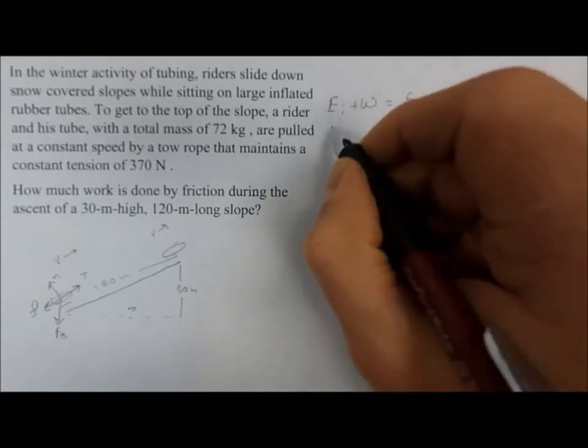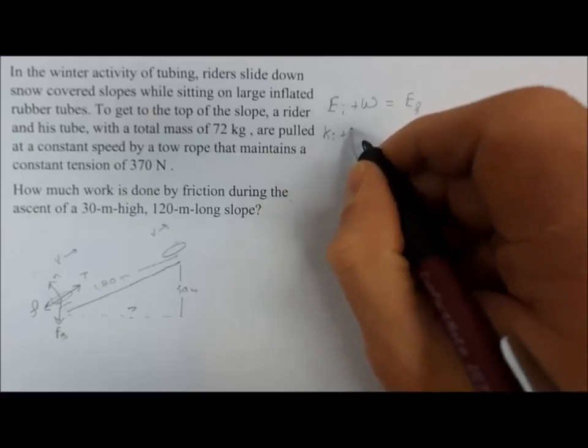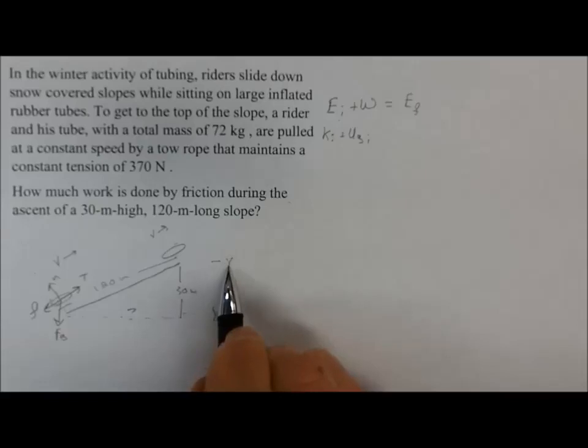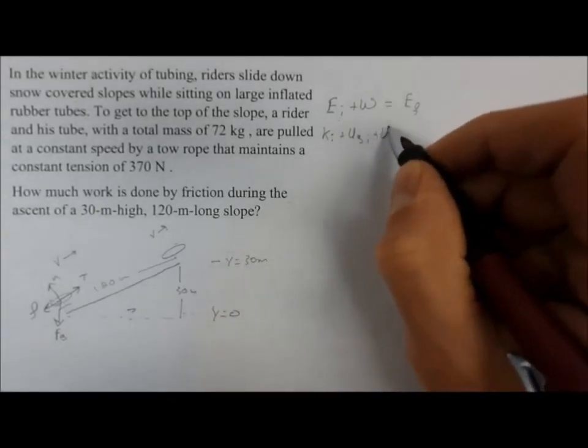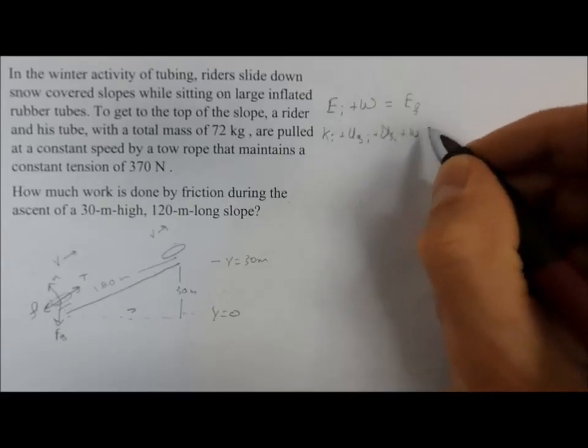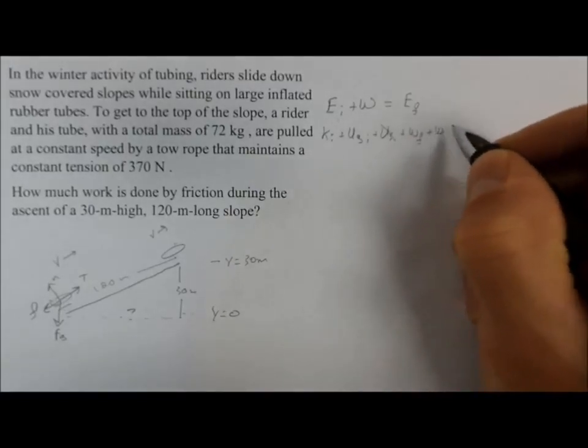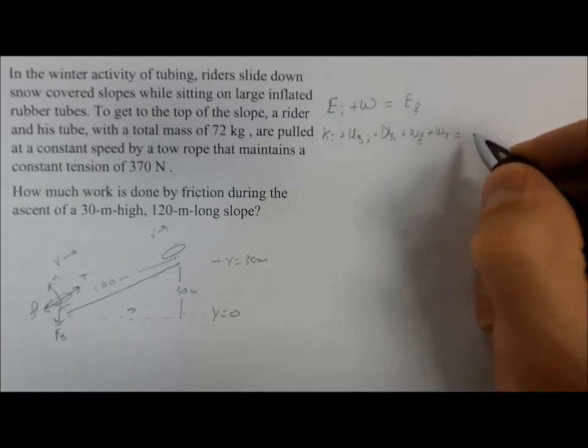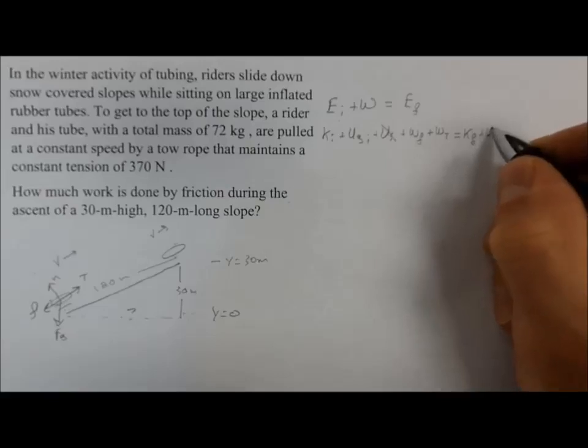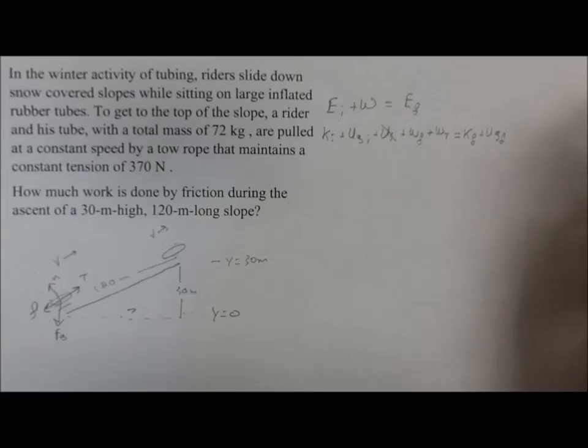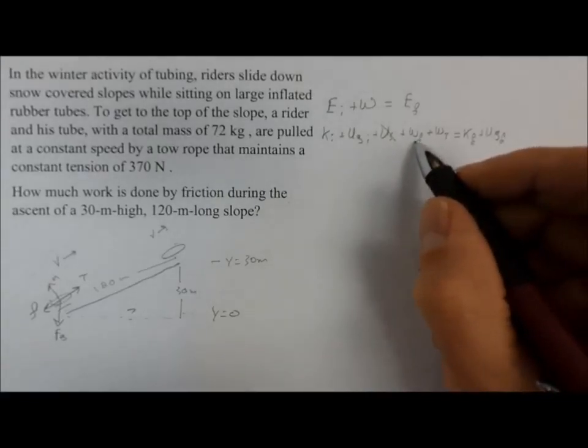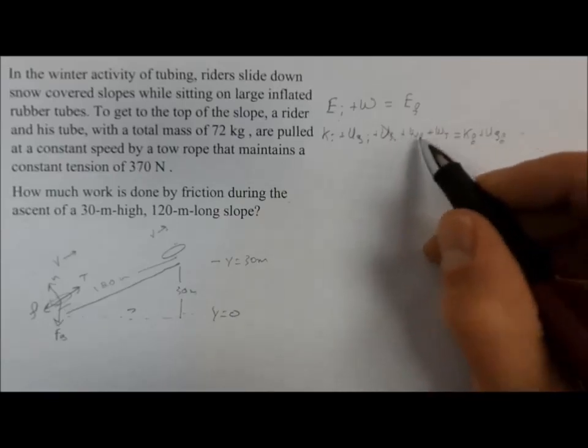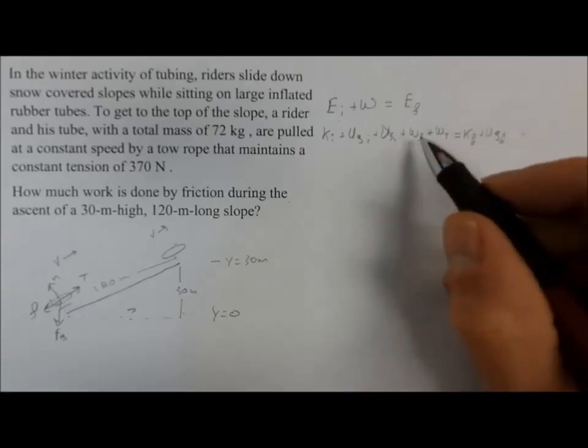So what we have when we figure all this out, there's a kinetic energy initial, there's a potential energy of gravity initial. I'm actually going to call this Y equals zero. And this is Y equals 30. Springs, we've got to consider there aren't any springs here. There's going to be work from the friction, and there's going to be work from the tension. This rope is pulling it up. And all that is going to equal the kinetic energy final plus the potential energy of gravity final. It gets to the top. I'm treating friction as something that does work. Sometimes you can often treat it as a thermal energy at the end. It's either doing work on the way up, or it's becoming thermal energy. I'm going to leave it as work.